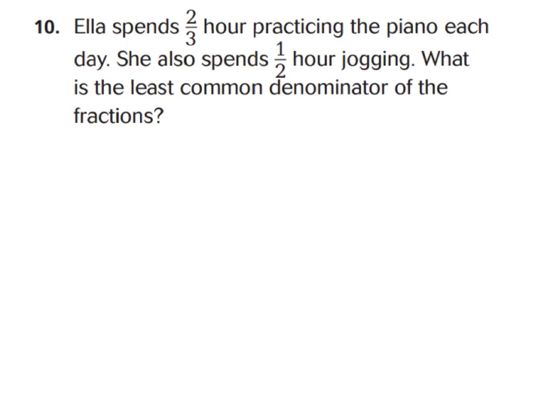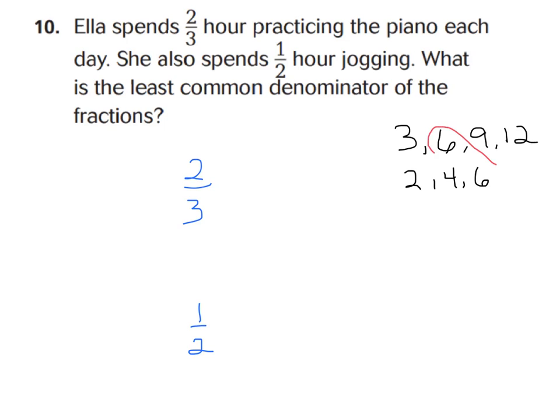Let's look at our real-world problem. It says Ella spends two-thirds of an hour practicing the piano each day. She also spends one-half of an hour jogging. What is the least common denominator of the fractions? You should have said two-thirds and one-half. List your multiples of 3: 3, 6, 9, 12. And multiples of 2: 2, 4, 6. The least one that comes up is 6, so your least common denominator is 6.